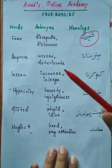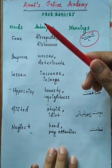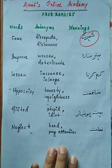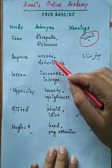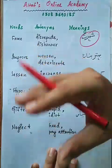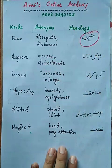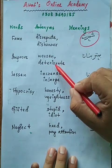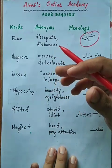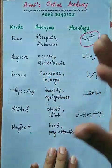Doosra word hai 'improve'. Improve ki meaning hai koi cheez behtar banana, mazeed achi karna — jaise 'improve your English', 'improve your style'. Improve ka jo opposite meaning word ya antonym hai woh hai 'worsen' — worsen ki meaning hai mazeed bura karna. Iska aur bhi ek opposite hai 'deteriorate', yani kisi cheez ko bigadna. Improve maane mazeed behtar banana, aur deteriorate maane kisi cheez ko bura karna.